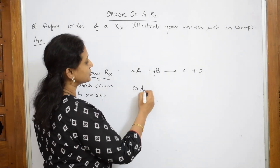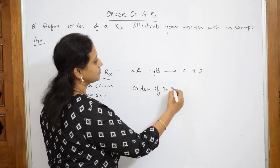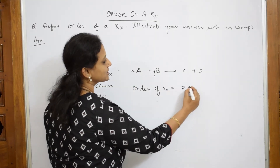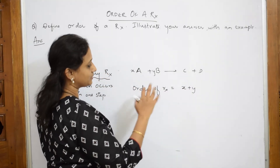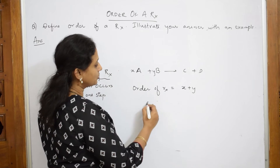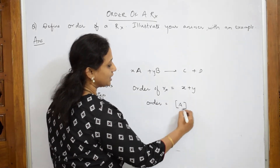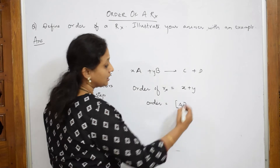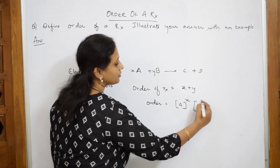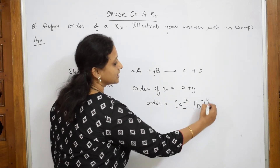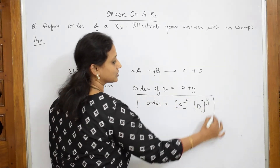Now, order of the reaction V is equal to X plus Y. What is X plus Y? That means the order of the reaction is concentration of A raised to the power X, into concentration of B raised to the power Y. So this is basically your order of the reaction.